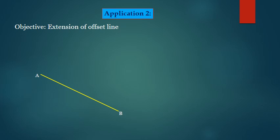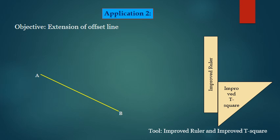Second application: extension to the offset line. Again we are using improved ruler and improved T-square. Line CD and their extensions are possible only in one single operation with the use of this tool.